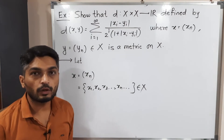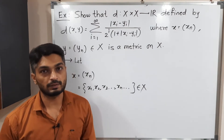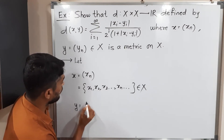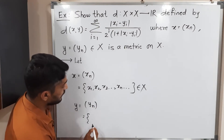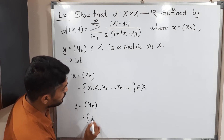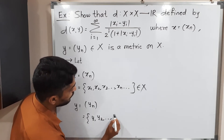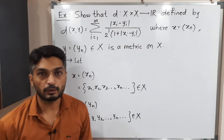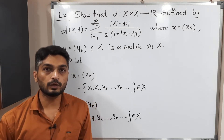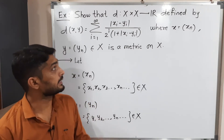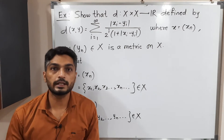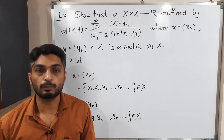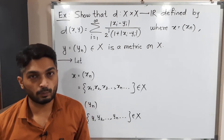We assume one more element of capital X, which is again a sequence of real numbers. So I'm considering y equal to (yn), which is again a sequence with terms y1, y2, and so on — yn and so on, having infinitely many elements. We have these two elements and D is defined in a specific way. We have to prove it is a metric, meaning D satisfies four properties. Let us discuss those properties one by one.